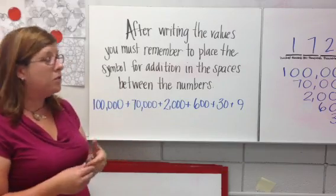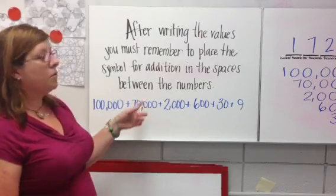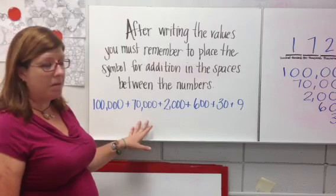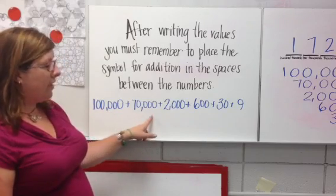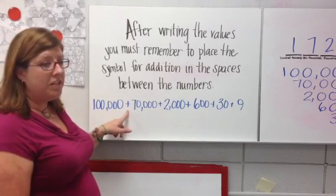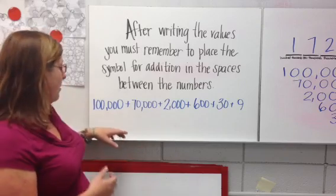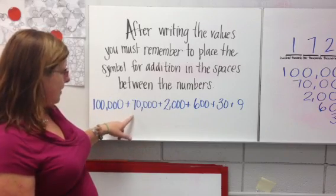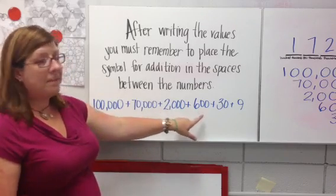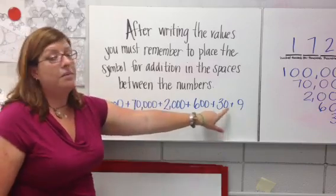After writing the values, you must remember to place the symbol for addition in the spaces between the numbers. So you can see I rewrote it here and added my symbol for addition so that now it looks like a long addition problem: 100,000 plus 70,000 plus 2,000 plus 600 plus 30 plus 9.